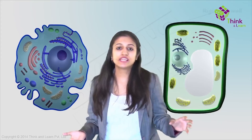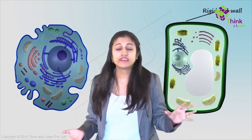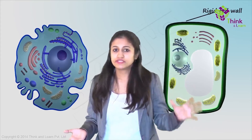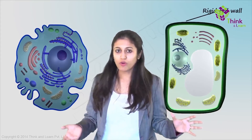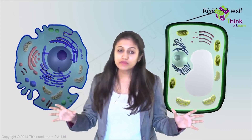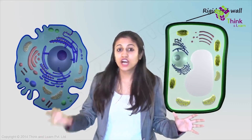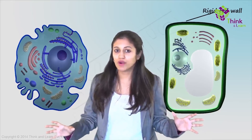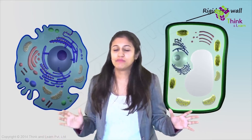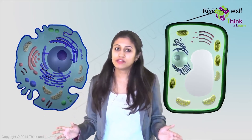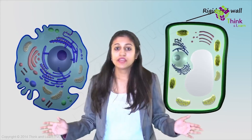A plant cell has a very rigid cell wall, while the animal cell starts off its boundary with the cell membrane. The plant cell also has a cell membrane.